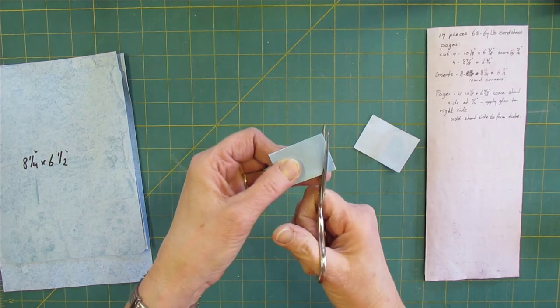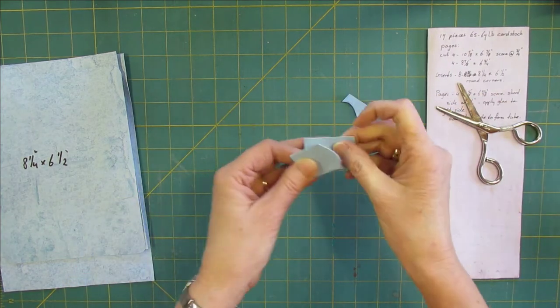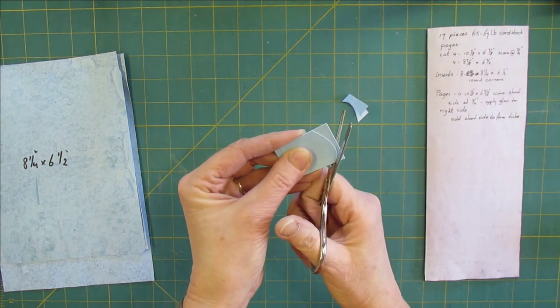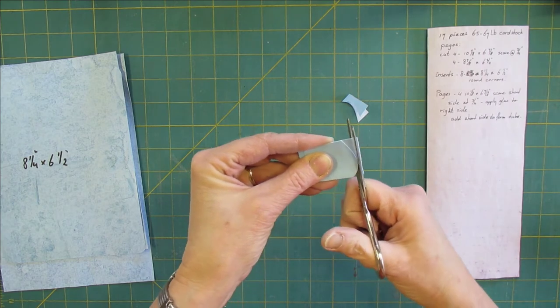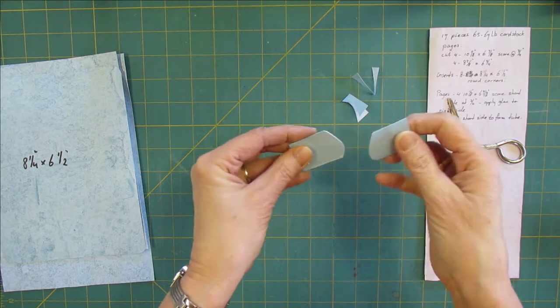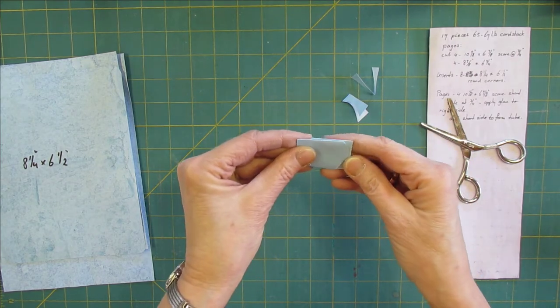Then you're going to place this shape on top of the other one, trace around, turn it over and decide how wide you want your tab to be.